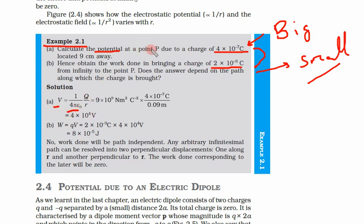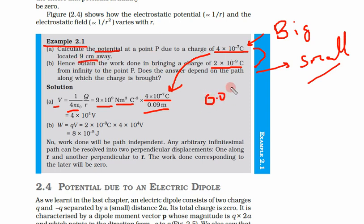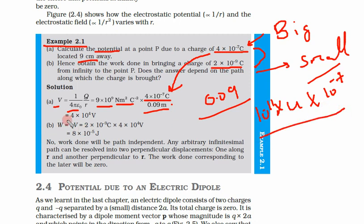The formula for potential is V = (1 / 4πε₀) × (q / r). Here 1/4πε₀ = 9 × 10⁹ N·m²/C², charge q = 4 × 10⁻⁷ C, and r = 9 cm = 0.09 m. Computing: 9 × 10⁹ × 4 × 10⁻⁷ / 0.09 gives 4 × 10⁴ volts. So the potential at 9 cm away from the bigger charge is 4 × 10⁴ V.